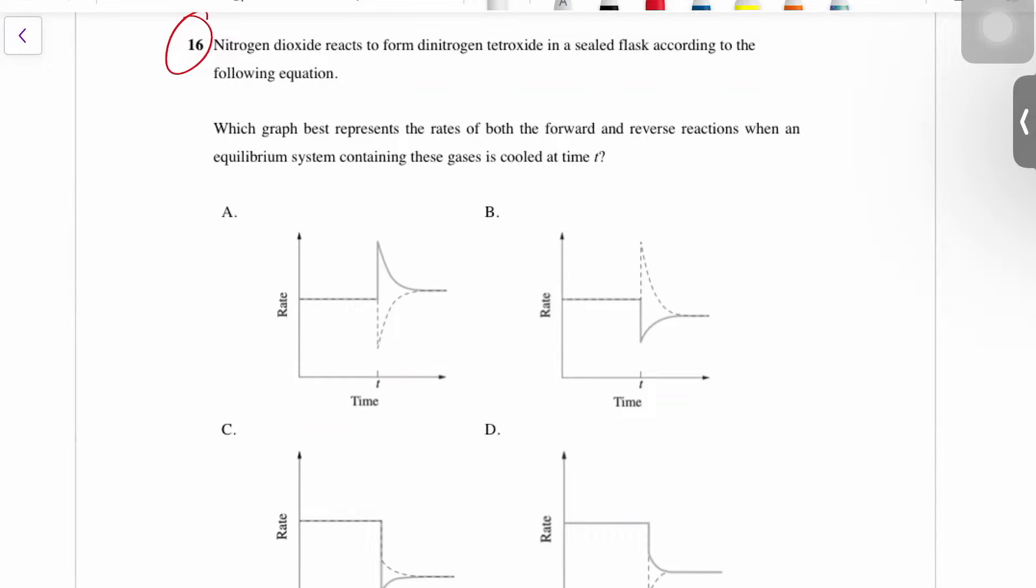Nitrogen dioxide reacts to form dinitrogen tetroxide in a sealed flask according to the following equation. And the equation is not there, but I will talk to you about how we can figure out the equation anyway. So I was doing this question, I was like, this is a harder question because they haven't given you the equation. And then apparently I was supposed to give you the equation, but even if they didn't, you can achieve the answer anyway. We'll talk about it like that.